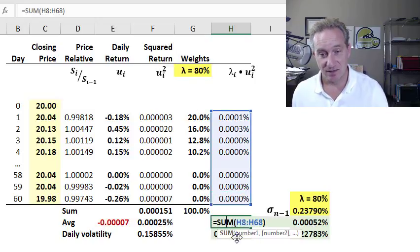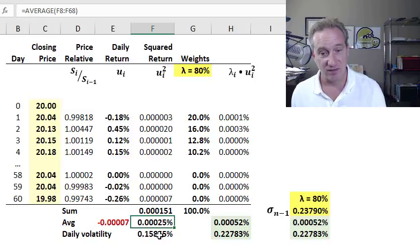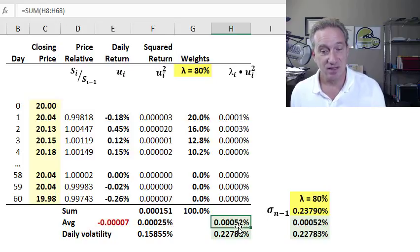And the sum of that series here is the weighted average, as opposed to under the historical standard deviation where we had an equally weighted or unweighted average. Here we have the exponentially weighted average, and that's the daily variance estimate under the EWMA approach.